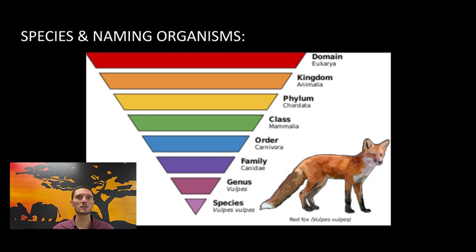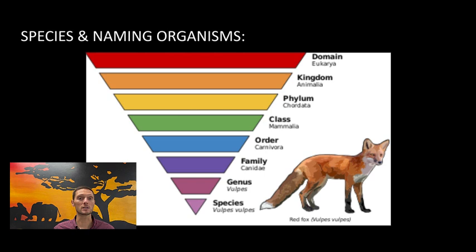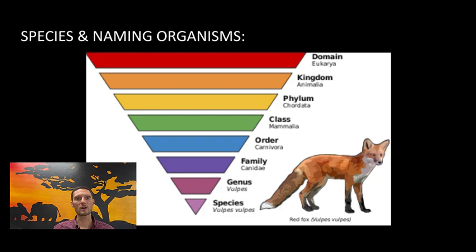A species name consists of two parts and is typically of Latin origins. The first word is always capitalized and designates the genus; the second word is always lowercase and is the actual species name. For humans it would be Homo sapiens, where Homo is the genus and sapiens is the species. Both words are always written in italics if typed, or underlined if handwritten. After the first use, the name can be abbreviated to just the initial letter of the genus and the species name — so H. sapiens for Homo sapiens. This system is used worldwide so scientists can refer to the same species clearly.